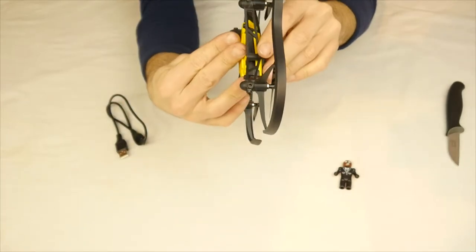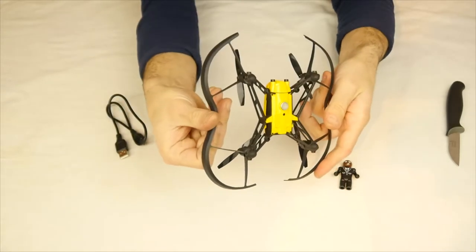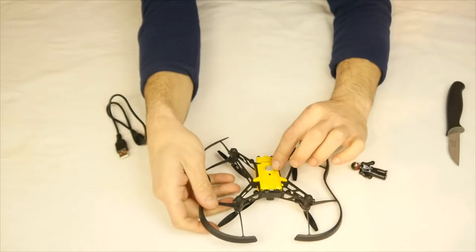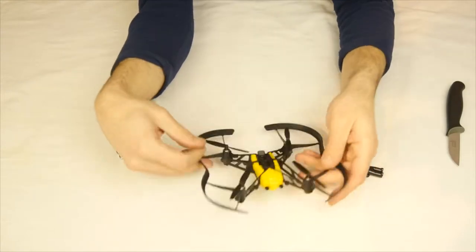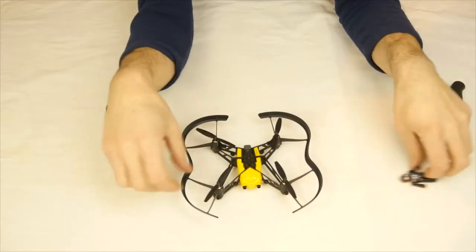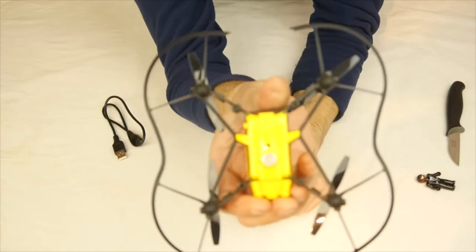You can see the USB charging port just underneath. Scary enough, the lights are already on so that obviously acts as an on-off switch. There seems to be some sort of sensor underneath and there's a camera right there. So that's like an ultrasonic sensor so it can probably detect its own height.